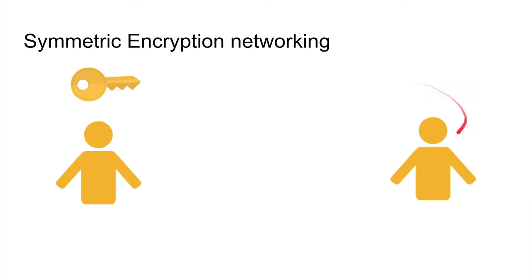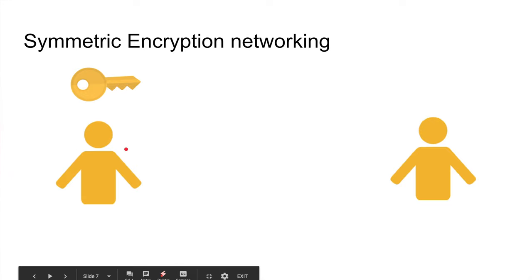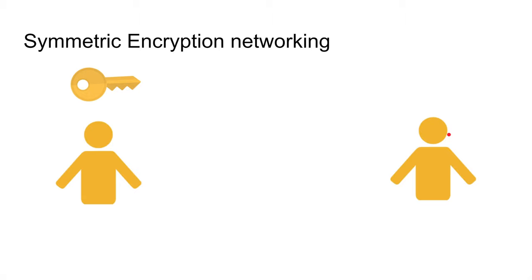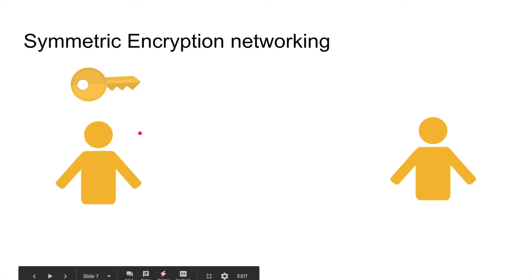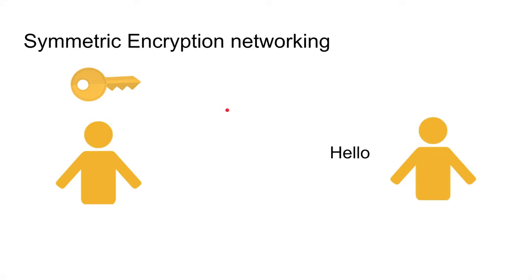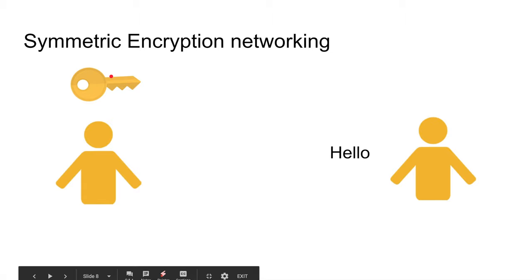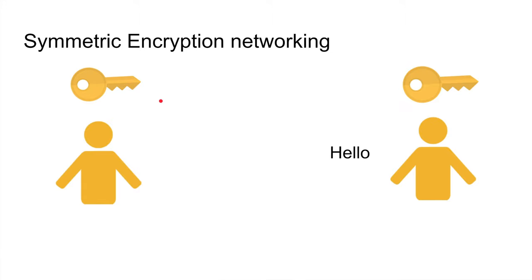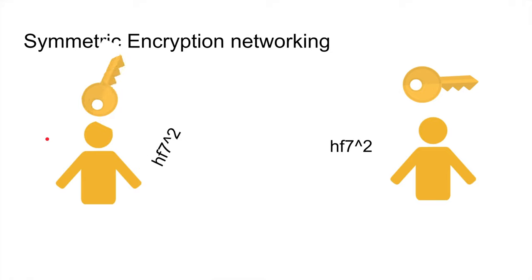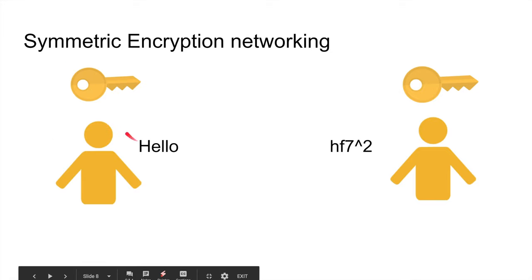Let's say Alice needs to communicate with Bob. Alice has the key — she invented it. Bob wants to send Alice a message, but to encrypt it he needs the key, which Alice has. So Alice sends the key over to Bob; they both have the same key. Bob encrypts his message with the key, sends the encrypted text to Alice, and Alice decrypts it using the same key.